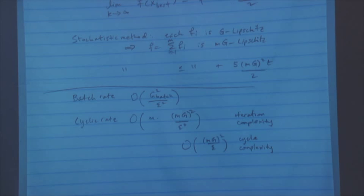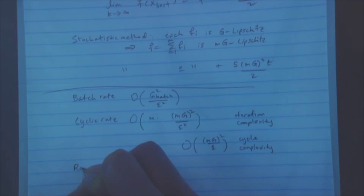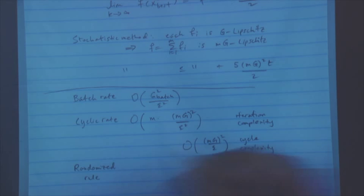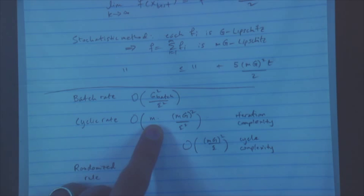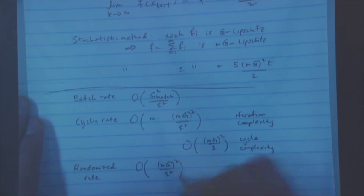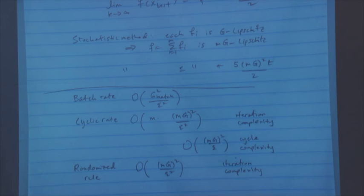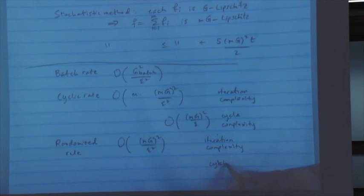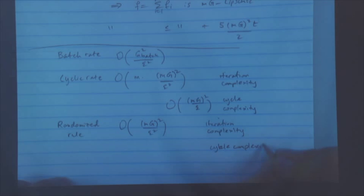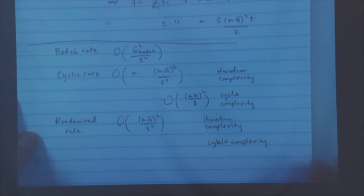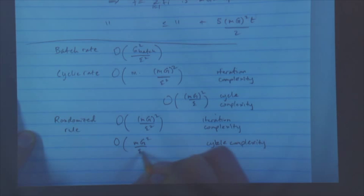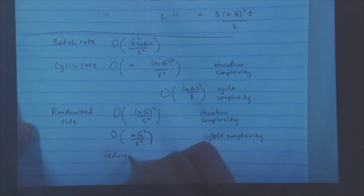Here's the very important point about the randomized rule, which is why people use it in practice: the iteration complexity essentially shaves off a factor of M. So the cycle complexity of the randomized rule is Mg²/ε² — reduced by a factor of M compared to the cyclic rule. That's the big gain we get with the randomized rule.